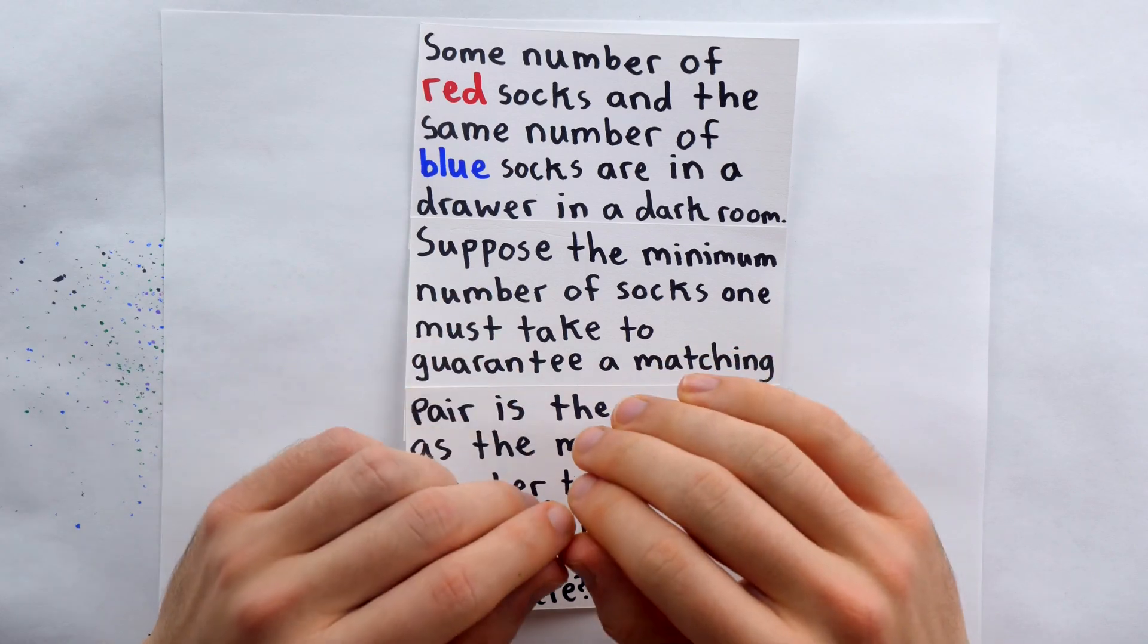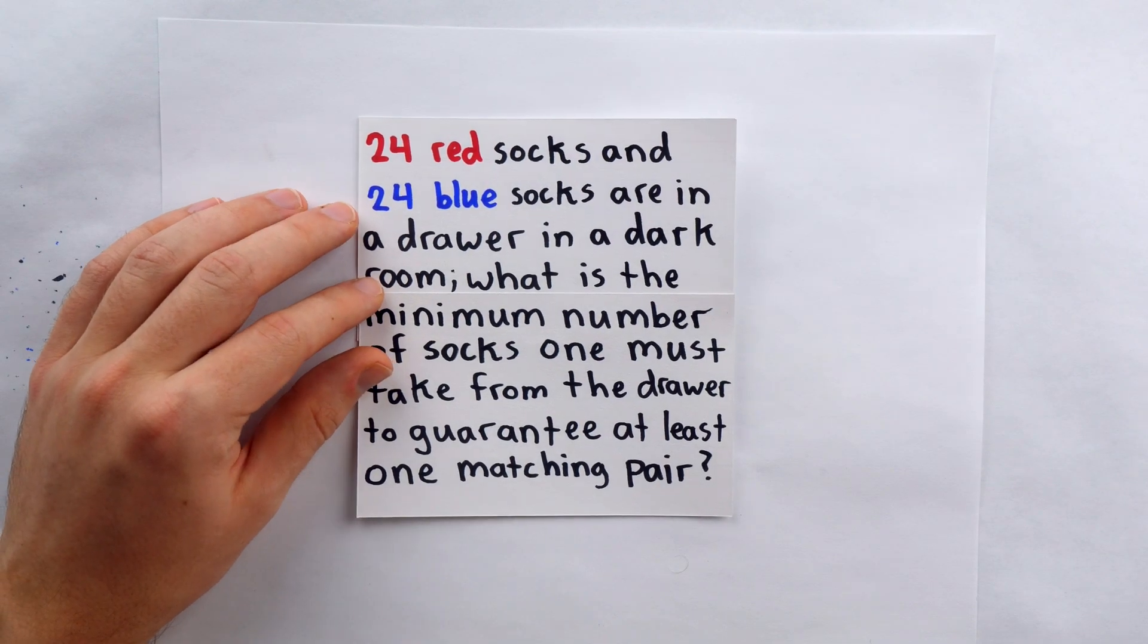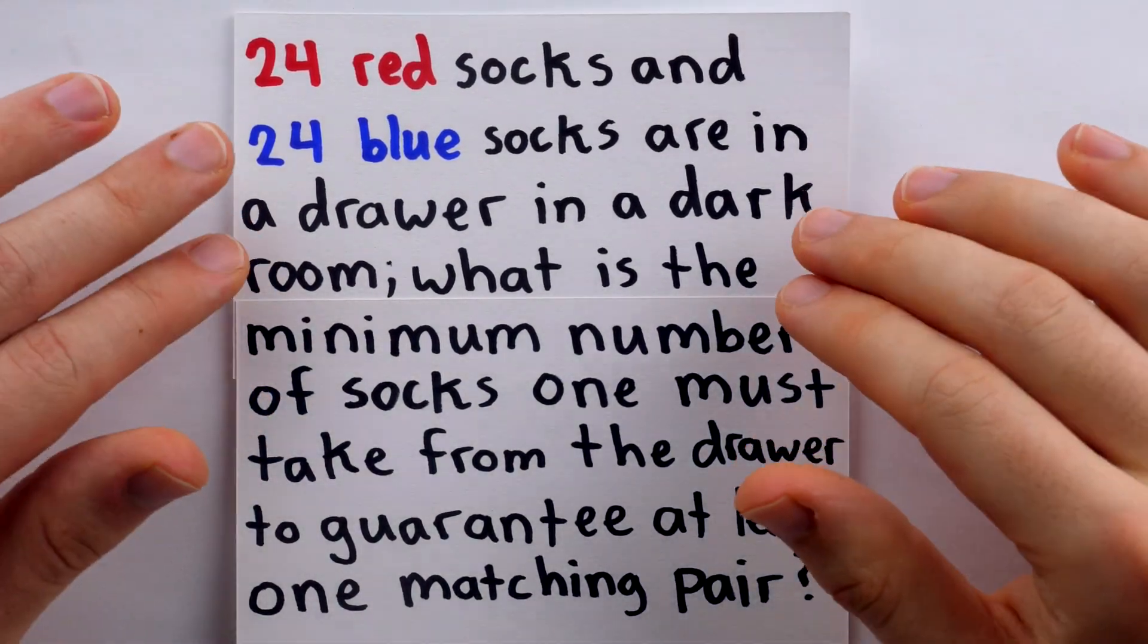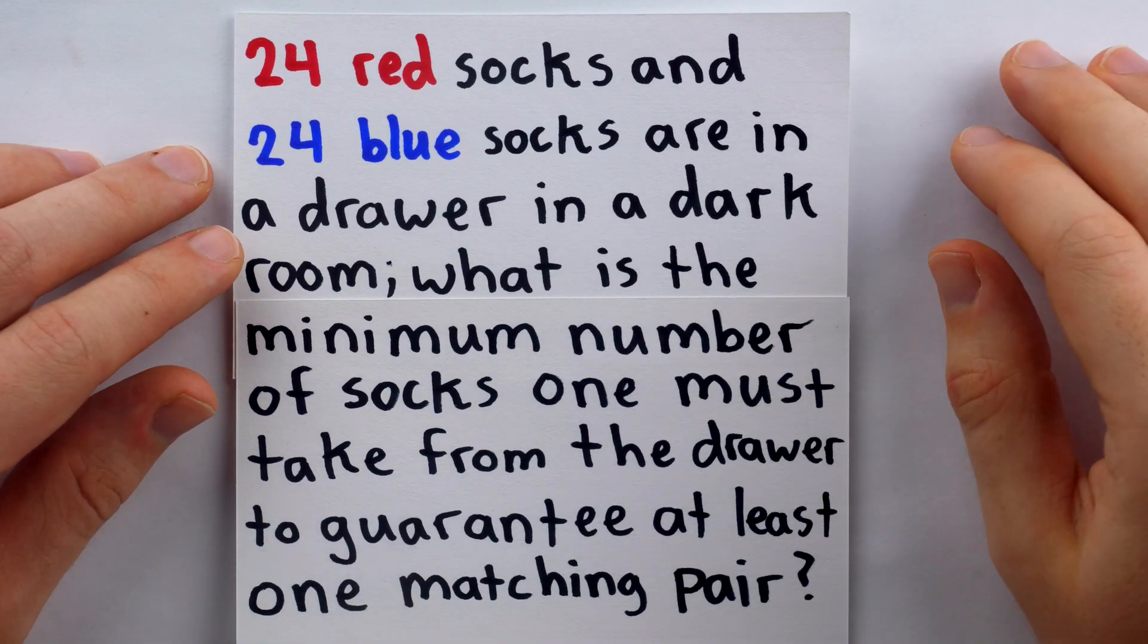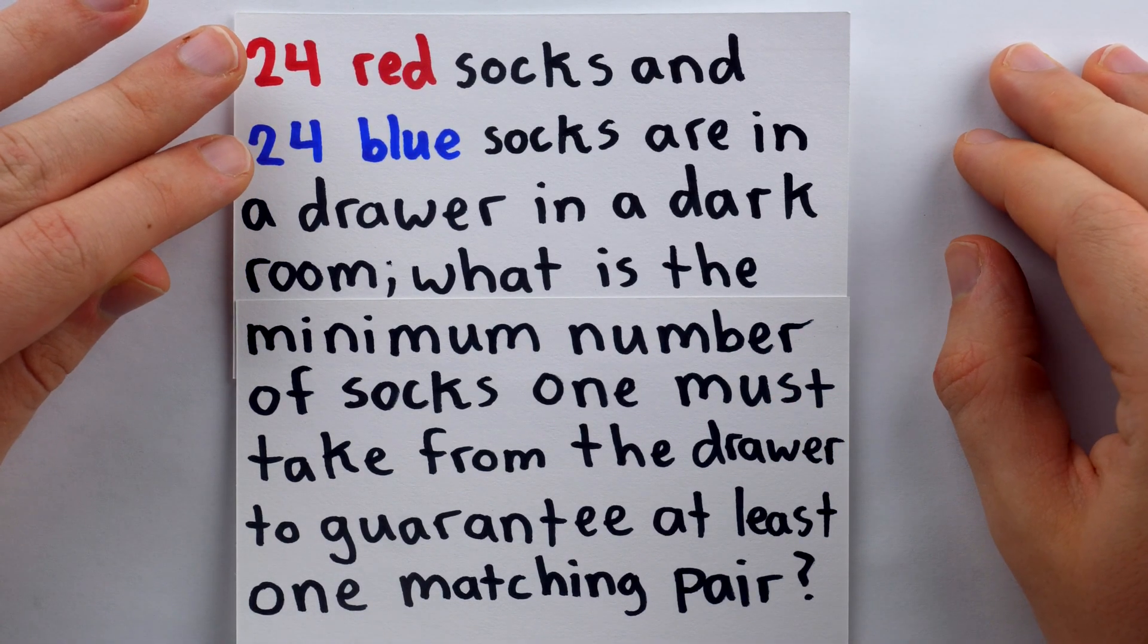We can make very quick work of this problem, but it will be useful to first consider a slightly simpler problem. 24 red socks and 24 blue socks are again in a drawer in a dark room, so this time we have specific information about the number of socks of each color. 24 red, 24 blue.